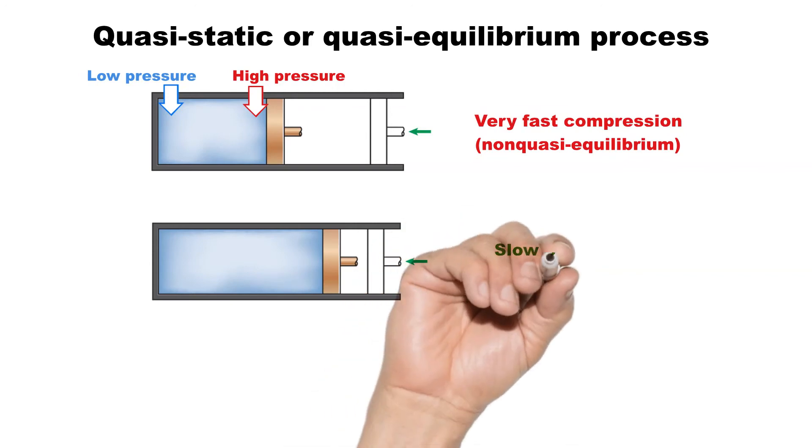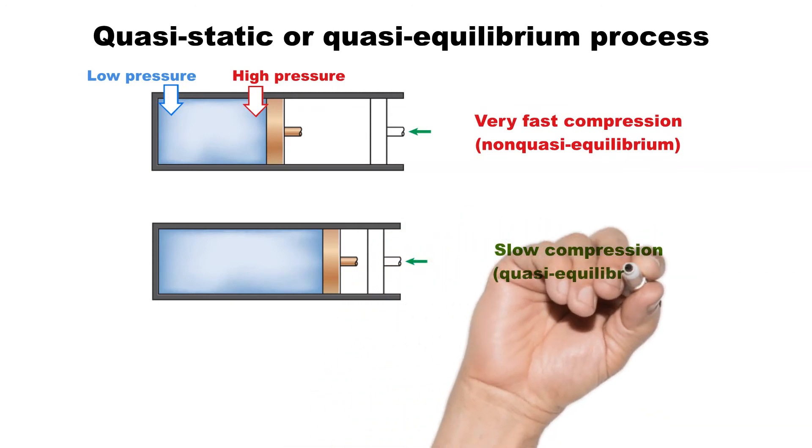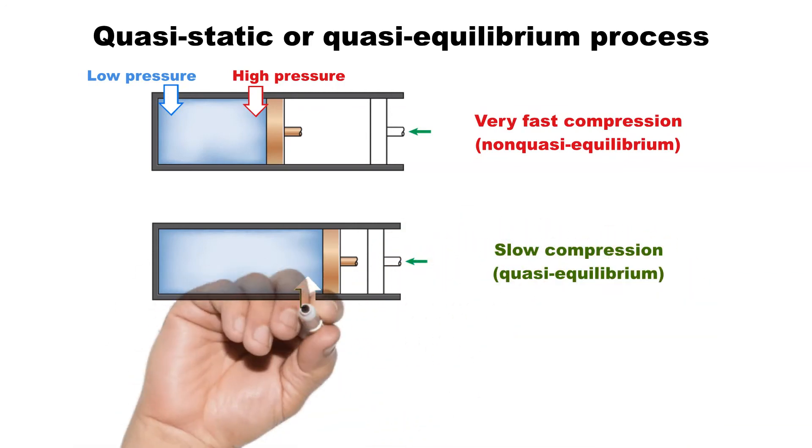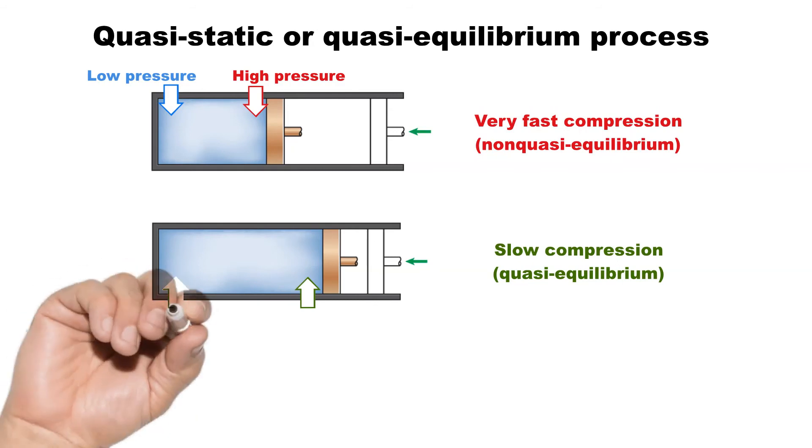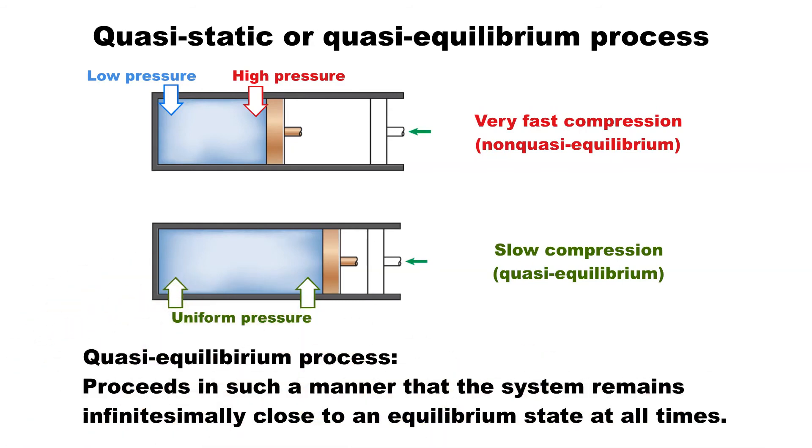However, if the piston is moved slowly, the molecules will have sufficient time to redistribute, and there will not be a molecule pile up in front of the piston. Therefore, equilibrium is maintained at all times, and this is a quasi-equilibrium process.